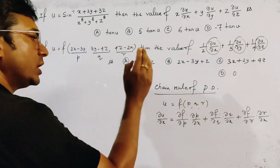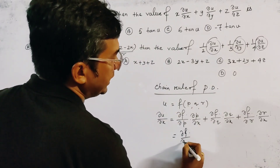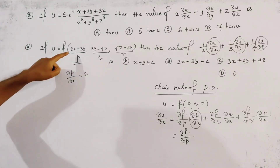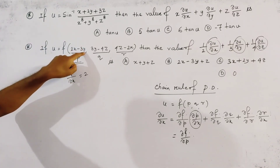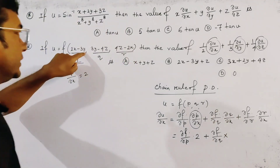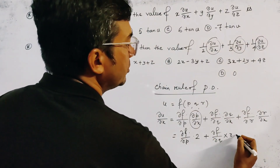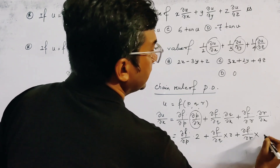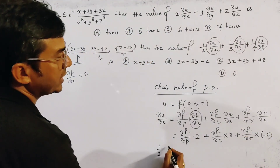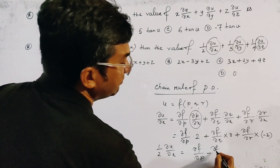Now ∂p/∂x = 2, because the partial derivative of 3y with respect to x is 0. So we put 2 here. Then ∂q/∂x = 0 because q is independent of x — there is no x in the expression of q. And ∂r/∂x = −2. So we get that ½ ∂u/∂x equals (∂f/∂p) minus (∂f/∂r).